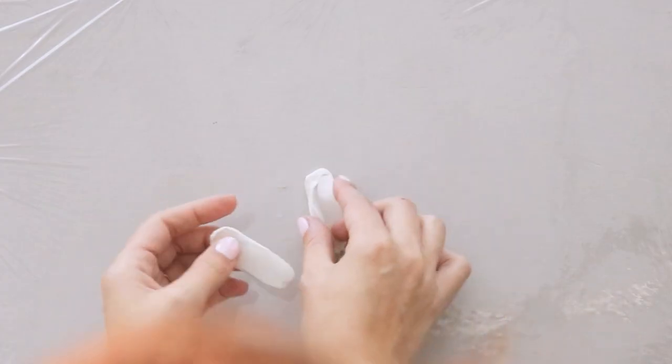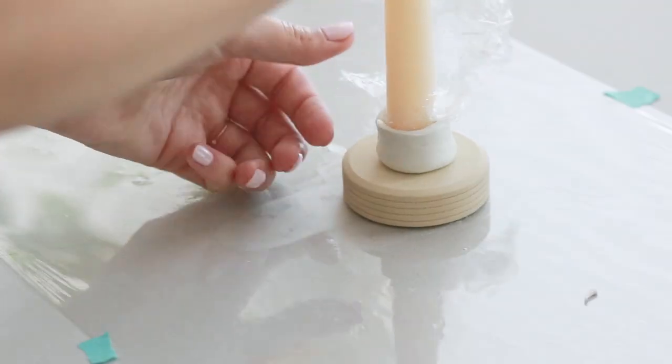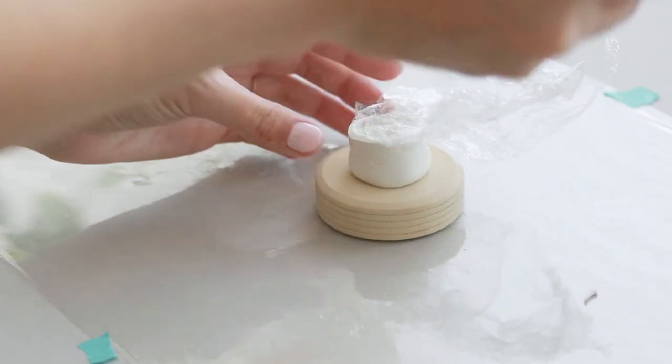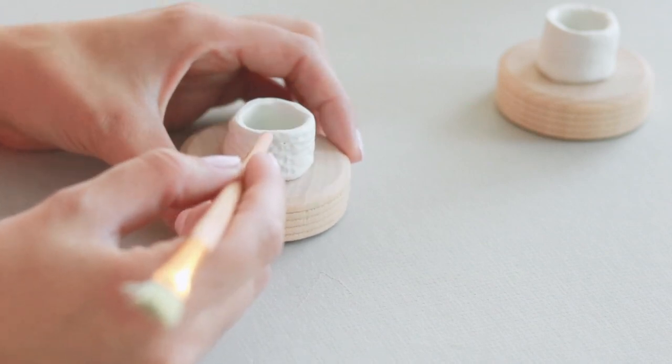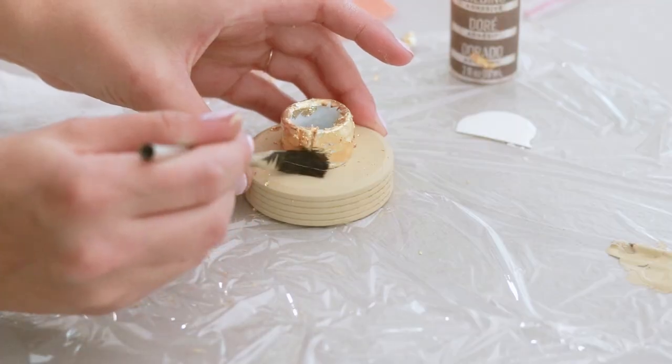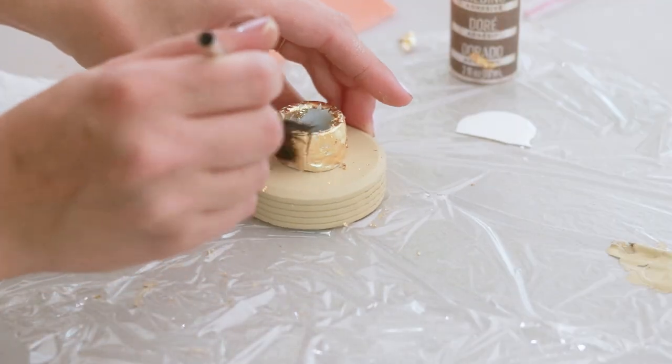If you're not familiar with Sugru, it's a moldable glue that can be formed into any shape, and once it sets (usually about 24 hours), it adheres permanently to the surface you attached it to. It's almost like playing with Play-Doh, but it's permanent once it dries.